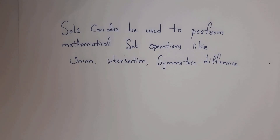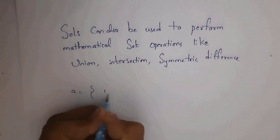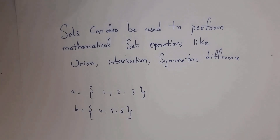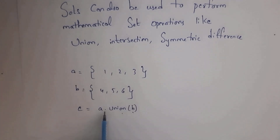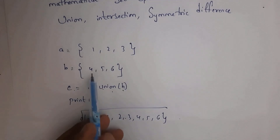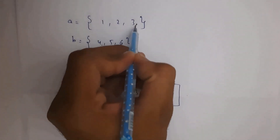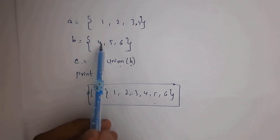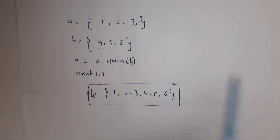I will explain each with an example. First, union: by using the union method, you can combine two sets. Here a = {1, 2, 3} and b = {4, 5, 6}. Write c = a.union(b) — this combines both sets and stores the result in c. Whenever you write print(c), you get output 1, 2, 3, 4, 5, 6. If a = {1, 2, 3, 4} and b = {4, 5, 6}, since 4 appears in both, it will be printed only once — output is 1, 2, 3, 4, 5, 6.